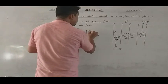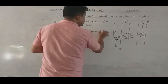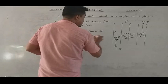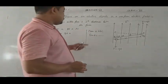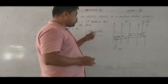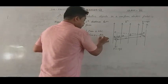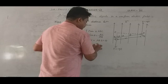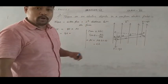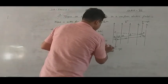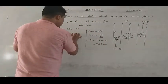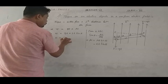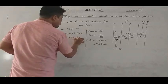From triangle ABC, sin theta equals perpendicular divided by hypotenuse, that is AC divided by AB. So AC is equal to AB times sin theta. And AB is the dipole length, which is 2L. Therefore AC equals 2L sin theta. Now substituting AC in the equation: tau equals qE into 2L sin theta.